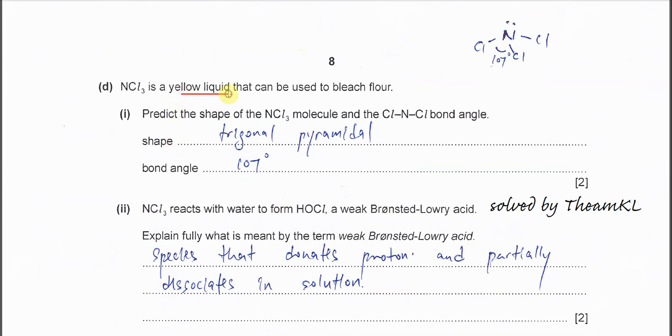NCl3 is a yellow liquid that can be used to bleach many things. Predict the shape of NCl3. First, you need to know how many bonding pairs and lone pairs. For NCl3, it has one lone pair and three bonding pairs. We know that lone pair has stronger or greater repulsion compared to bonding pairs. If you slightly compress the bond angle, you'll get 107. If it's four sigma bonds like methane, then it's 109.5. That's why the shape is trigonal pyramidal and the bond angle is 107.